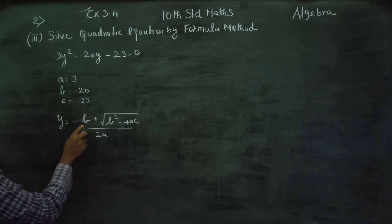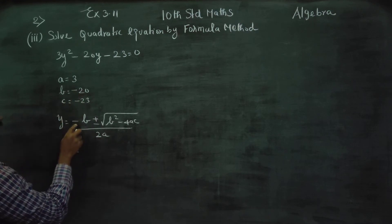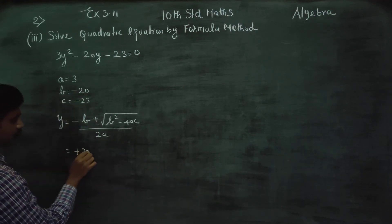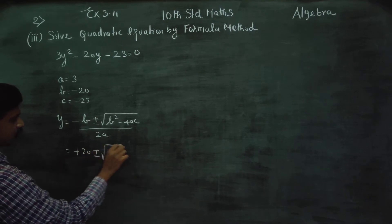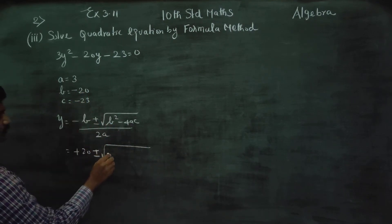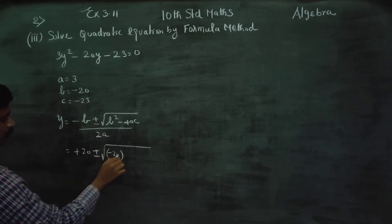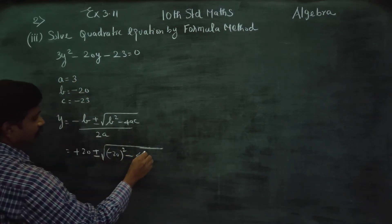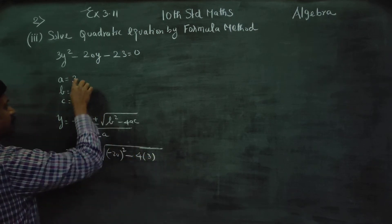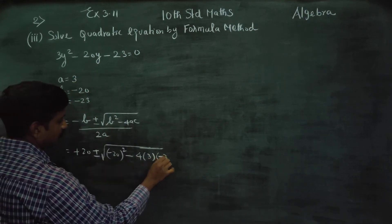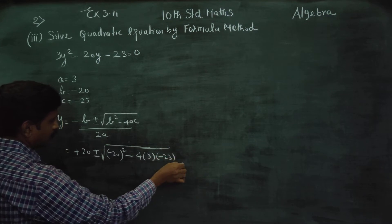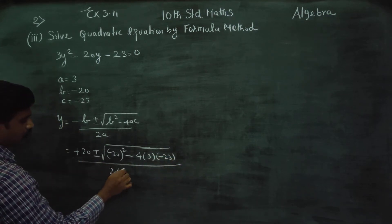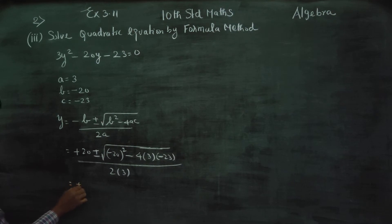Substituting the values: minus B gives us plus 20, plus or minus square root of B squared — B is minus 20, so B squared is minus 20 squared — minus 4 times A times C, where A is 3 and C is minus 23, all divided by 2 times A, which is 2 times 3.